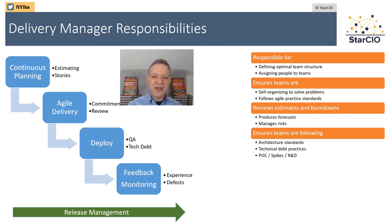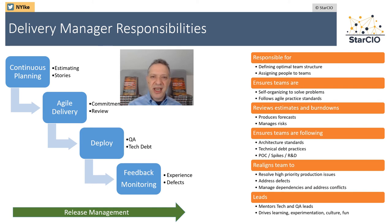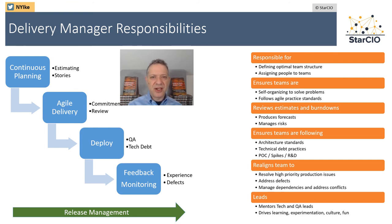I want my teams following architecture standards and working on technical debt. I want to see a healthy prioritization of innovation — whether it's POC work, research, learning, or spikes — so that the team continues to craft what they're doing. I also want to make sure the team is realigned when required to handle production issues. When there is a production issue, I prefer not calling it all hands on deck; instead, I go to the delivery manager and team leads and ask who needs to be most involved. The delivery manager is also most responsible for guiding and mentoring team leads, ensuring that they're constantly learning.